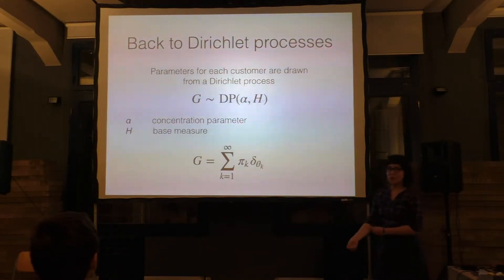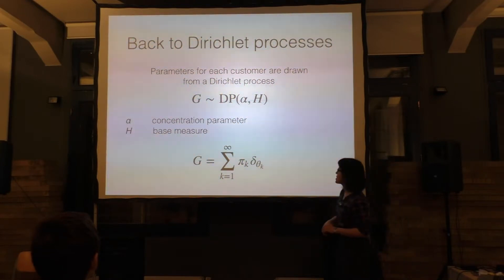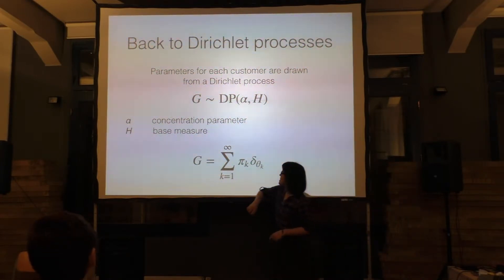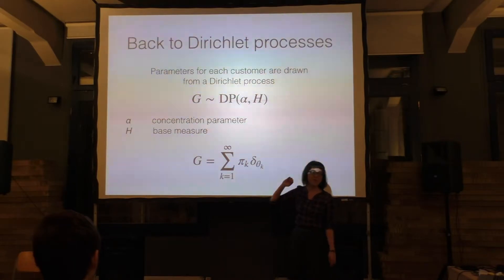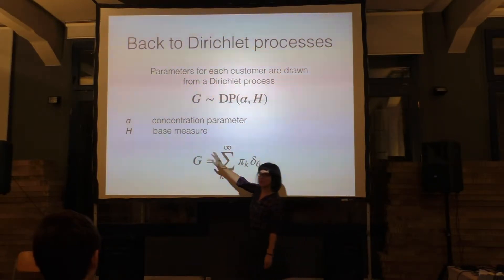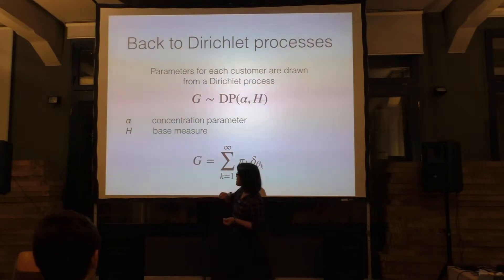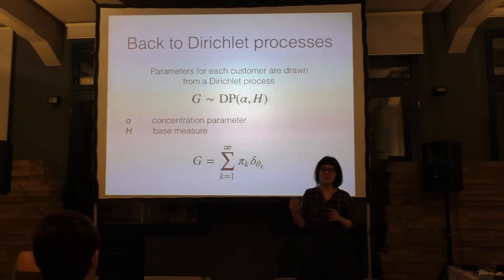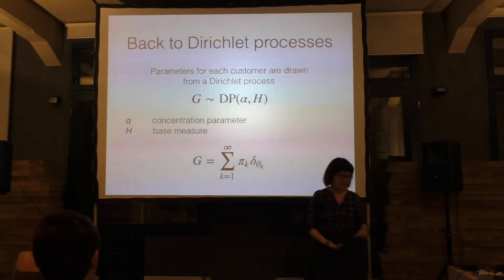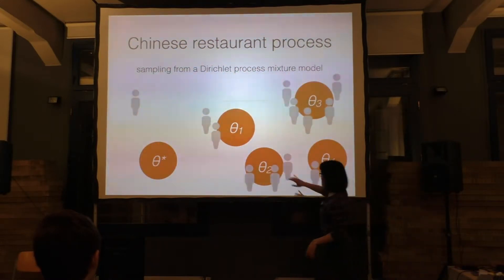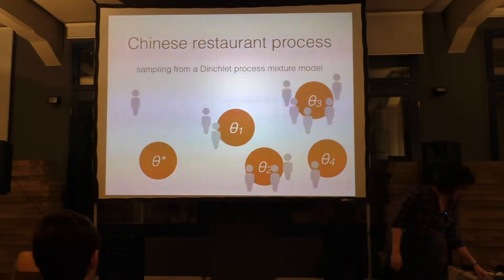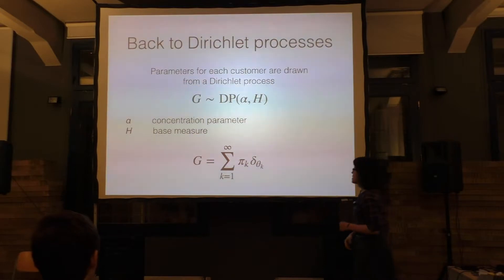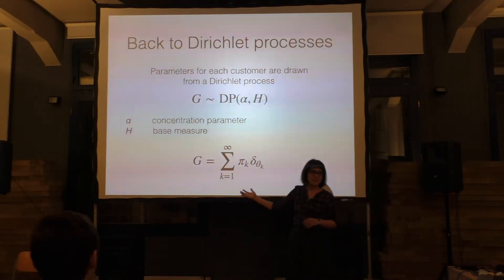Because new customers get seated at a table with probability proportional to the number of people already sitting there, larger clusters will get more popular over time — this is the rich-gets-richer property. More formally, G is distributed according to a Dirichlet process with a concentration parameter alpha, which is the probability of opening a new cluster, and with some base measure H, a probability distribution that defines our parameters for clusters. The thetas are drawn from H. That's basically the full definition of the Dirichlet process.